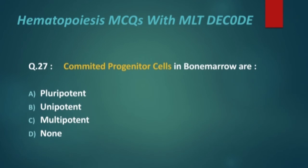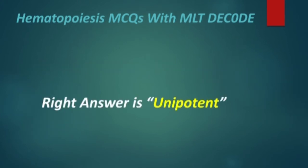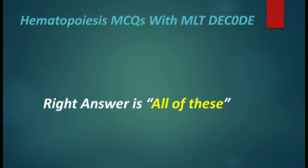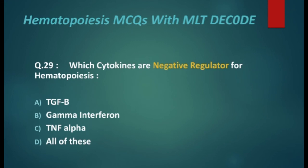Next: committed progenitor cells in bone marrow are? Options are pluripotent, unipotent, multipotent, and none. The right answer is unipotent. Next: interleukin-3 is a multi-lineage stimulating factor that stimulates growth of which precursor? Options are granulocyte, megakaryocyte, erythroid cells, monocyte, and all of these. The right answer is all of these.